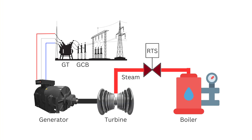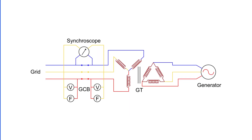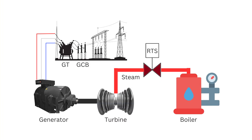Reverse power flow in a generator can occur due to several reasons, most notably the failure of the prime mover or improper synchronization during generator operation. The failure of the prime mover is a critical cause. The prime mover, such as a steam turbine, is responsible for driving the generator to produce active power. If the prime mover fails, the generator remains connected to the grid but starts consuming active power instead of supplying it. This situation can arise due to various mechanical or control system failures.